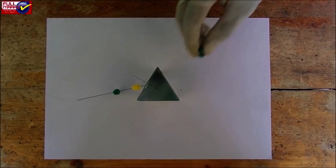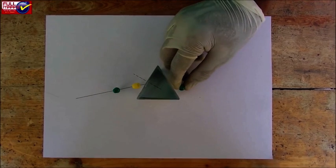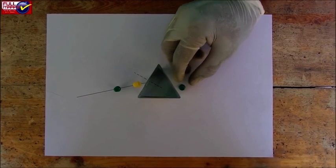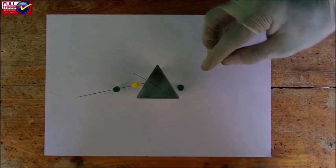Place two pins R and S where image of the line PQ is formed. Tips of pins P, Q, R and S should lie on the same straight line.